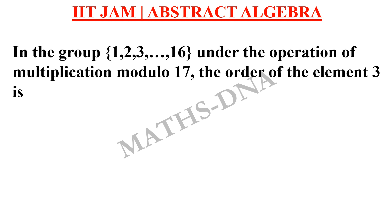In the group {1, 2, 3, ..., 16} under the operation of multiplication modulo 17, the order of the element 3 is? The options are: (a) 4, (b) 8, (c) 12, and (d) 16.